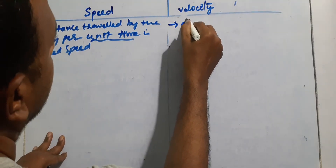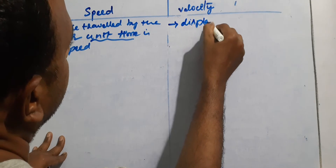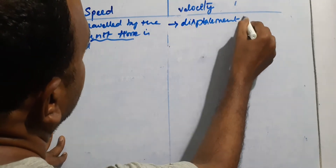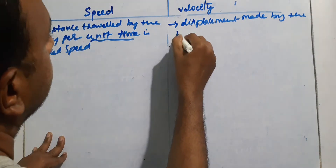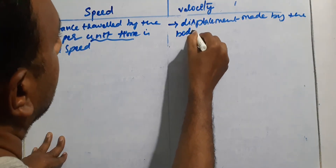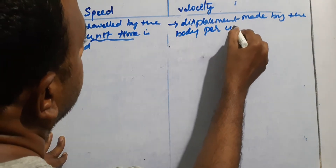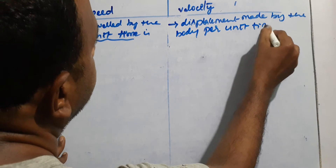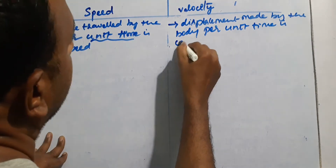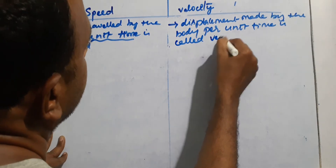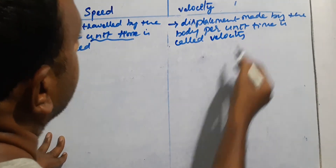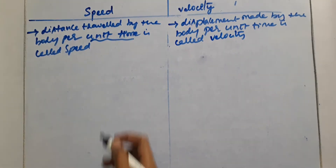Whereas displacement made by the body per unit time is called velocity. You know the differences between distance and displacement were explained in the previous video, so you can see and understand clearly what the differences between distance and displacement are.